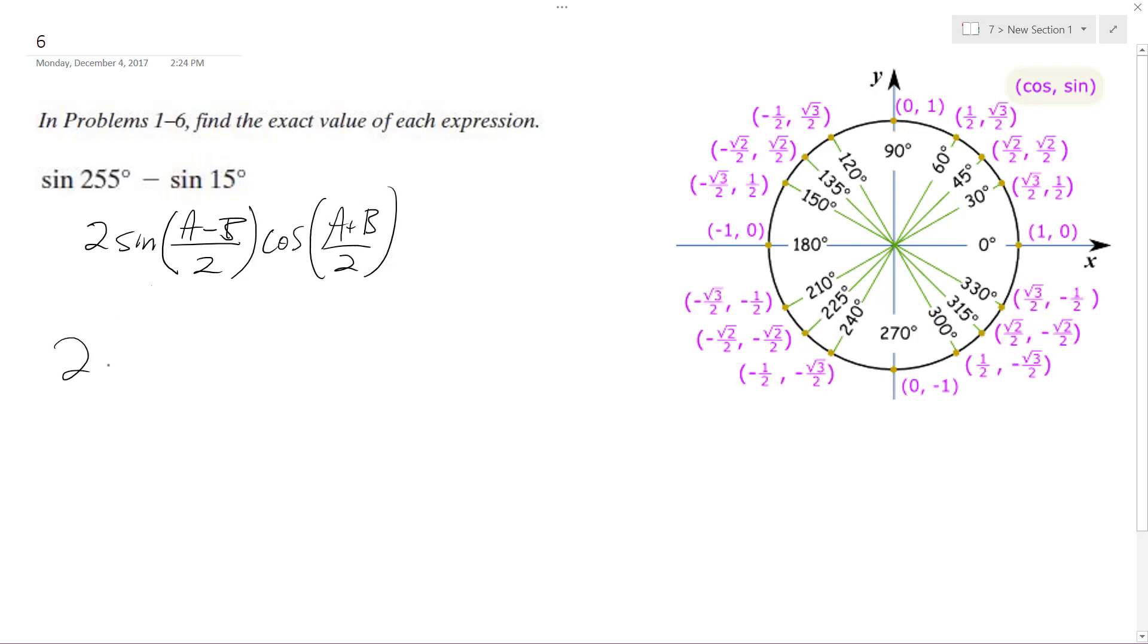So this becomes 2 times the sine of 255 minus 15 over 2 times the cosine of 255 plus 15 over 2.